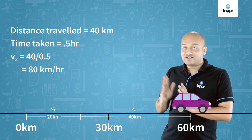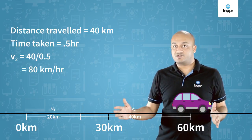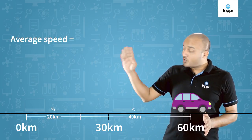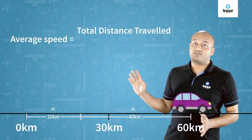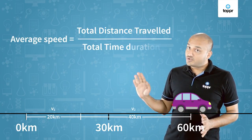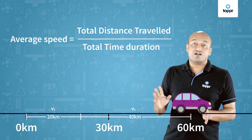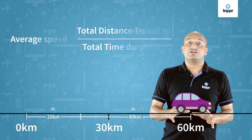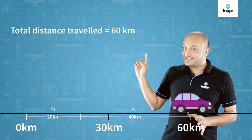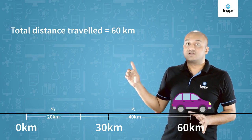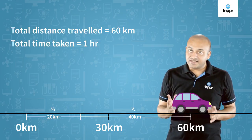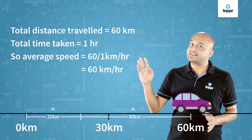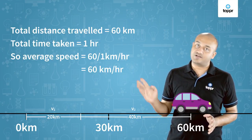Now let's look at the average speed for the total duration. The formula for average speed is total distance divided by total time. It does not matter if the speed was changing in between. Total distance traveled was 60 kilometers, total time taken was 1 hour, so the average speed is 60 kilometers per hour.